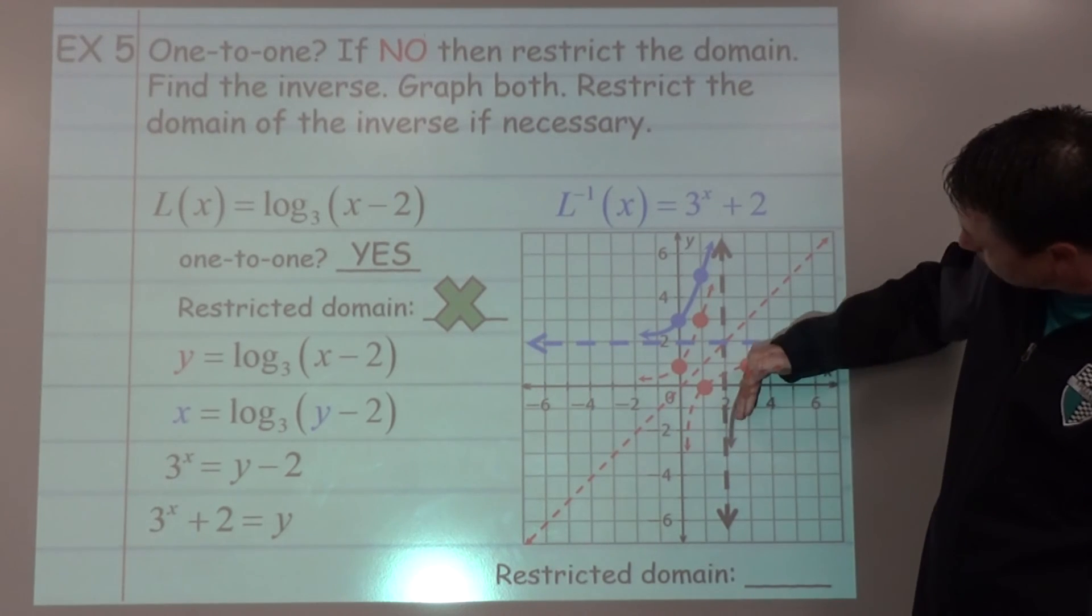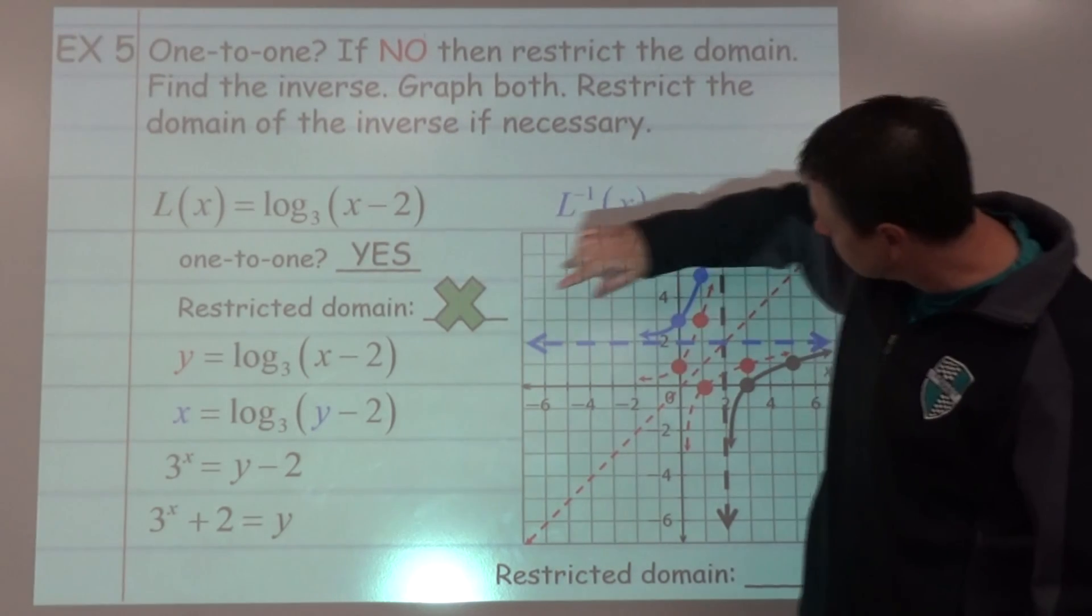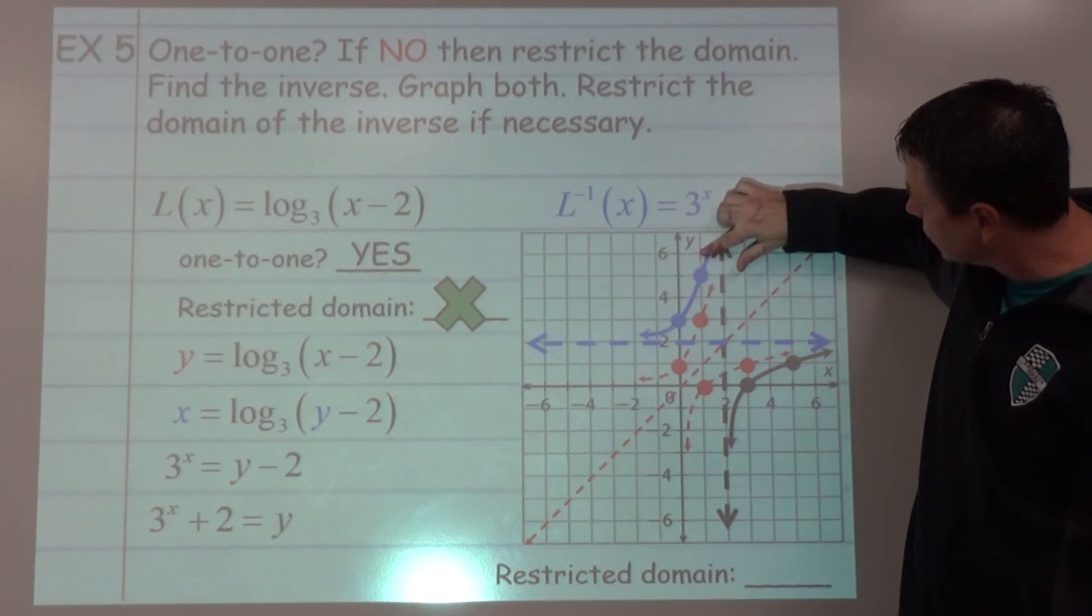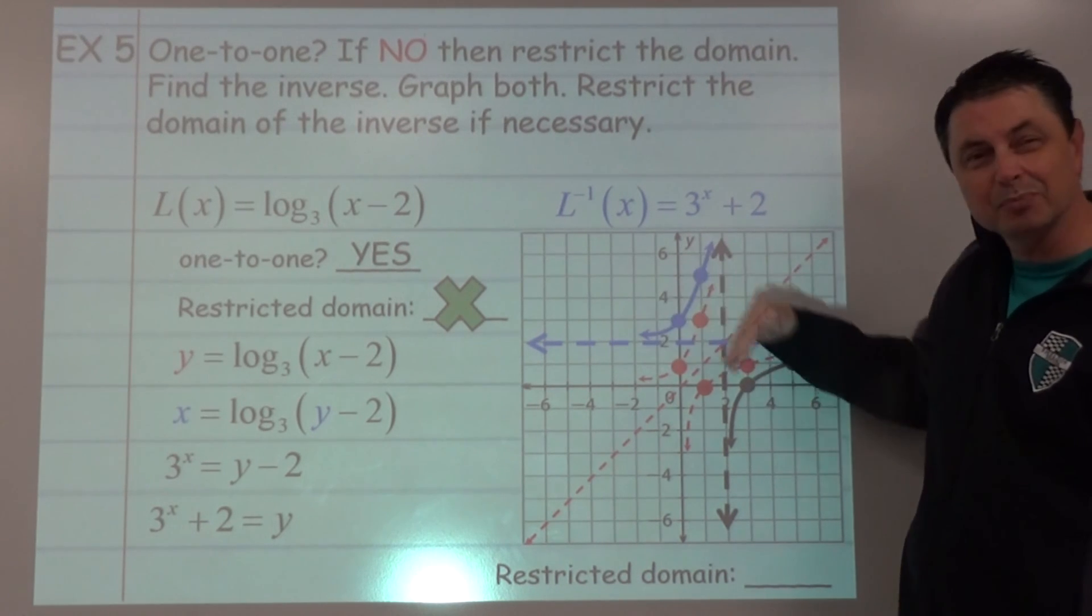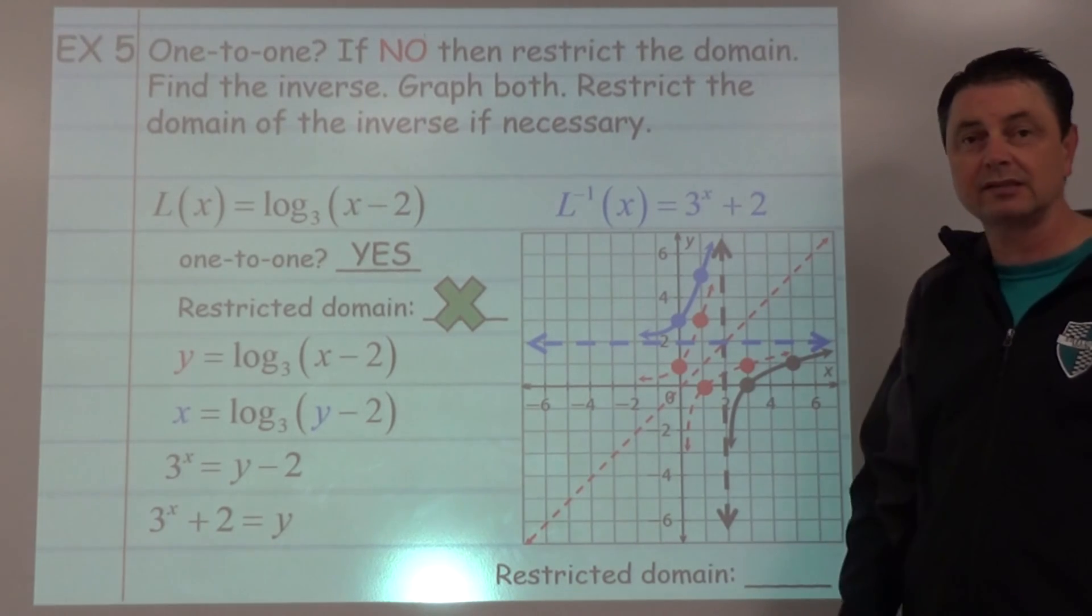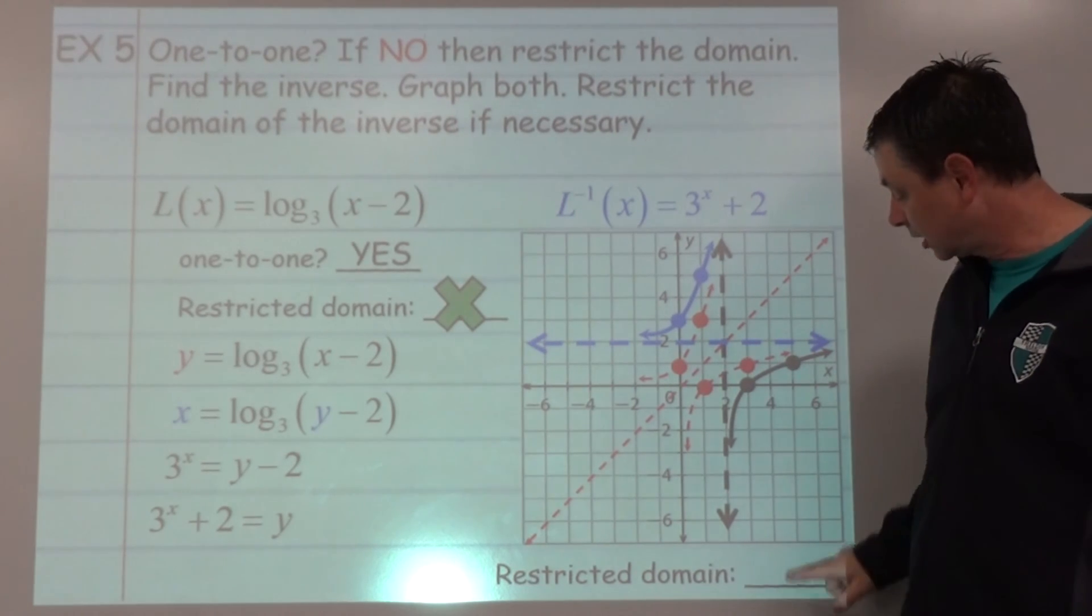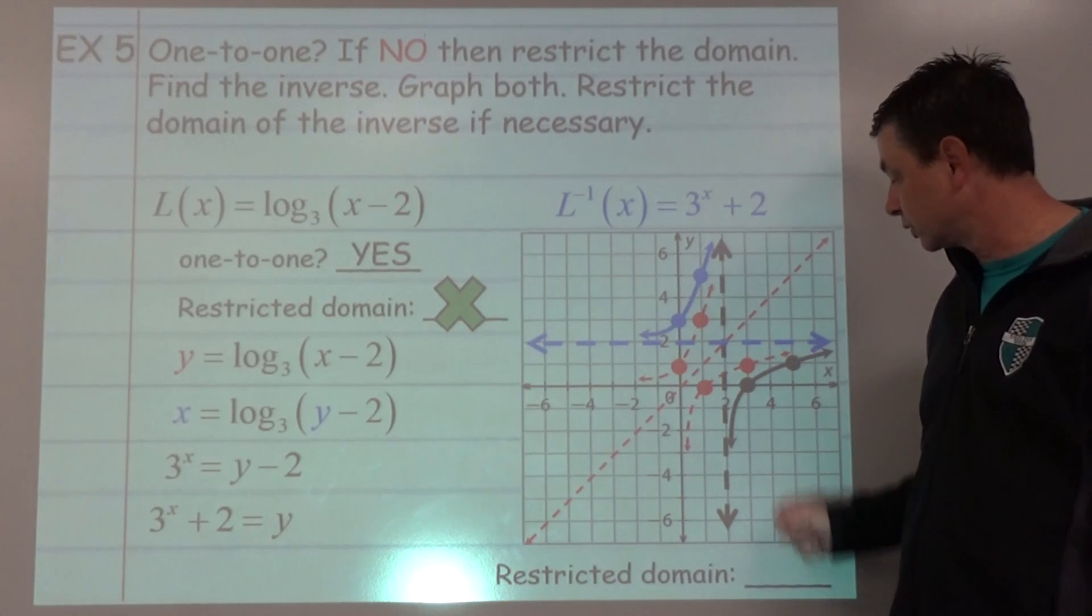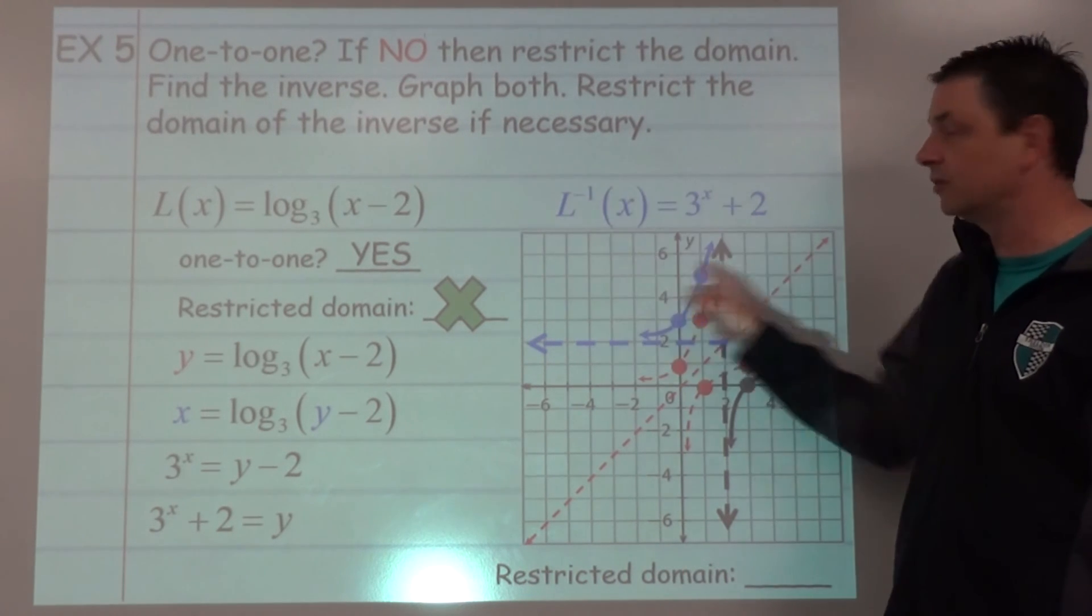So let's look at the black graph here. That's L of x. Inverse function blue right there. Are they perfect reflections in this diagonal line y equals x? Yes, they are. And that means we do not need to restrict the domain of this.